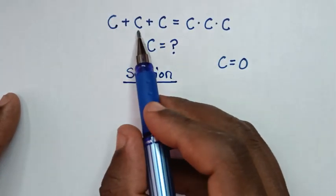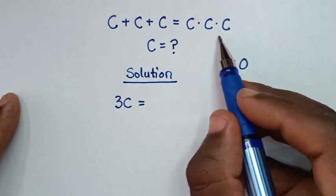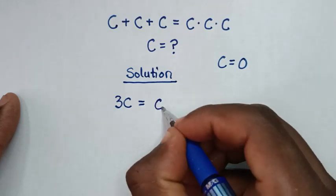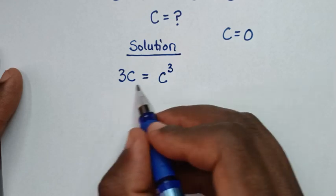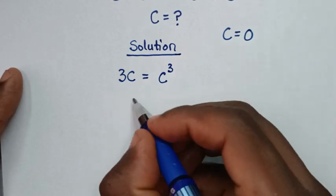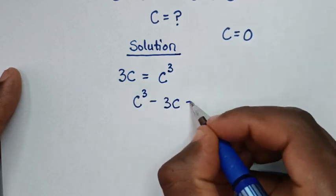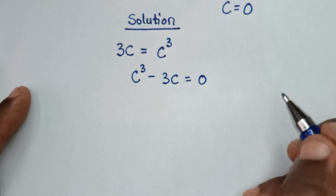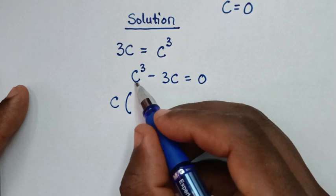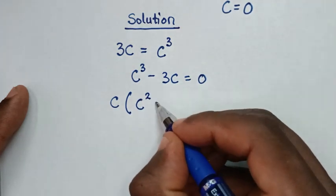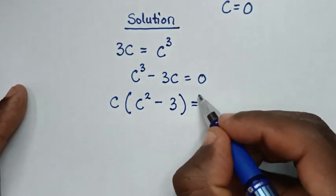From here, c plus c plus c is three c, and c times c times c is c to the power of three. So we have 3c = c³. Taking 3c to the right side gives c³ minus 3c equals zero. On the left side, c is common, so we factor out c to get c times (c² minus 3) equals zero.